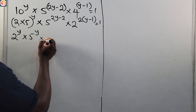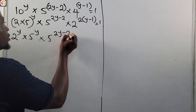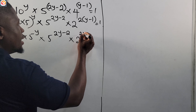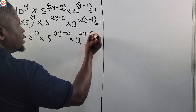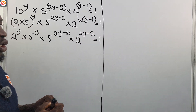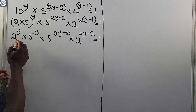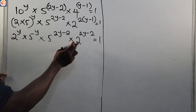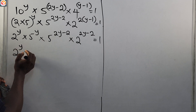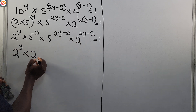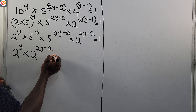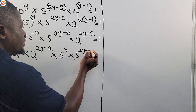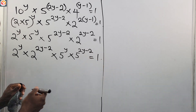Proceeding: times 5 raised to power 2y minus 2, then times 2 raised to power — opening the bracket — 2 times y is 2y, 2 times minus 1 is minus 2. This is also equal to 1. We observe there are common terms here, so we rearrange. Bringing the 2s together: 2 raised to power y times 2 raised to power 2y minus 2, then times 5 raised to power y times 5 raised to power 2y minus 2, equals 1.